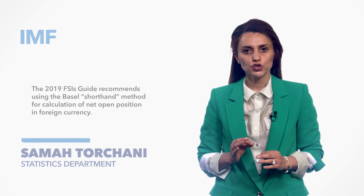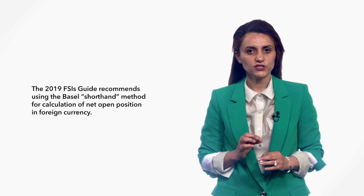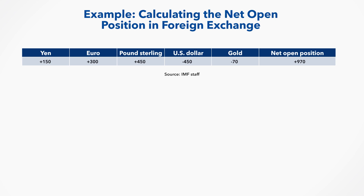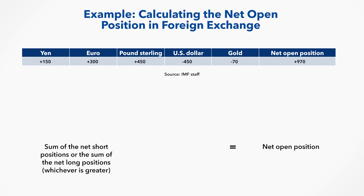The 2019 FSI's guide recommends using the Basel shorthand method for calculation of net open position in foreign currency. The nominal amount of the net position for each foreign currency and of gold is first converted into the reporting currency using the spot rate. The net open position is then calculated by adding the sum of the net short positions or the sum of the net long positions, whichever is greater, plus the absolute value of the gold position.